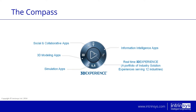This brings us to the compass. The 3D Experience platform moves completely around the compass, which is the command center from which we control everything. The compass has four main areas: the social and collaborative apps, the simulation apps, the information intelligence apps, and the 3D modeling apps. Depending on your area of specialty, you would use one quadrant more often.